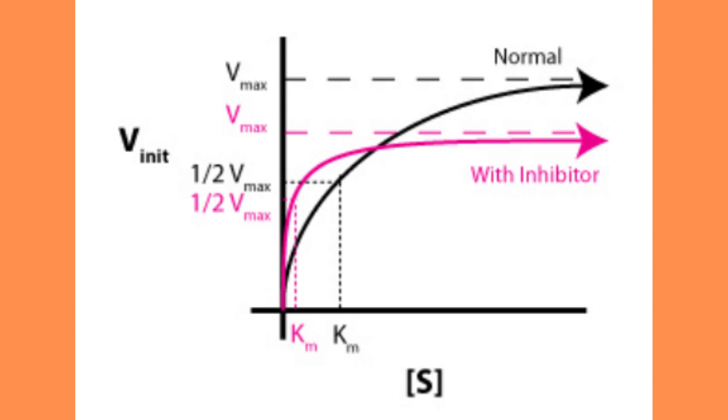A lower Vmax indicates a lower overall rate of reaction, which makes perfect sense considering that the inhibitor prevents the enzyme from producing products.